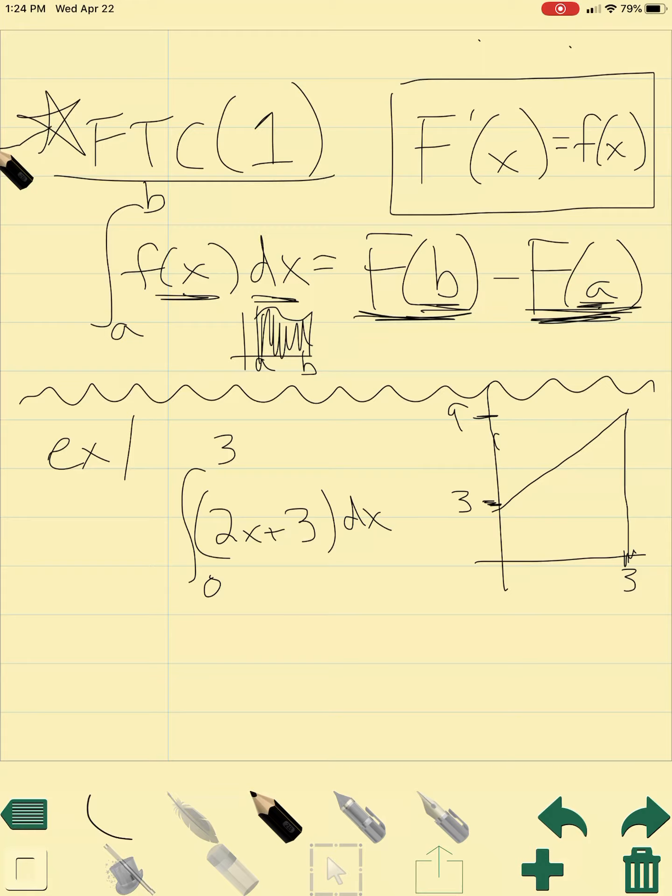So looking at an example of this, if we have the integral from 0 to 3 of 2x plus 3 dx, that's basically saying if we have this line 2x plus 3, which is just this line over here, and we want to go from 0 to 3, what's this area underneath the curve? What we can do is we can take the antiderivative of this.